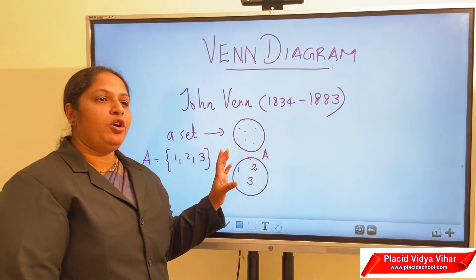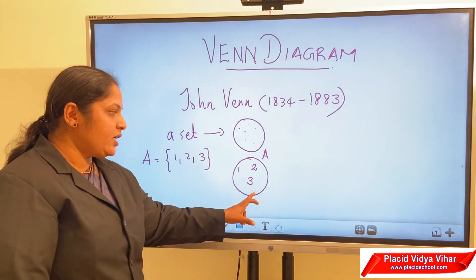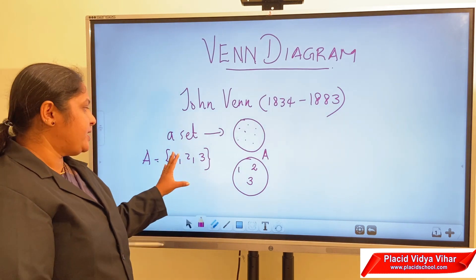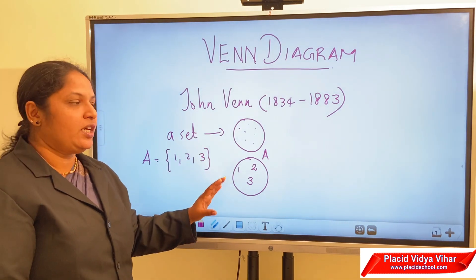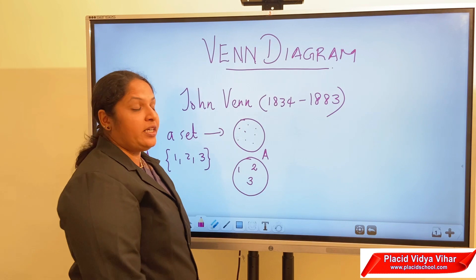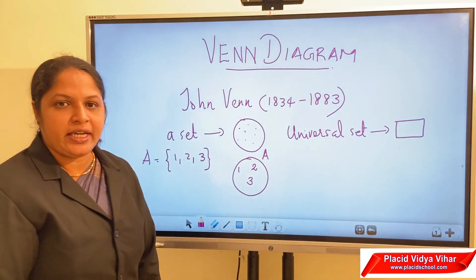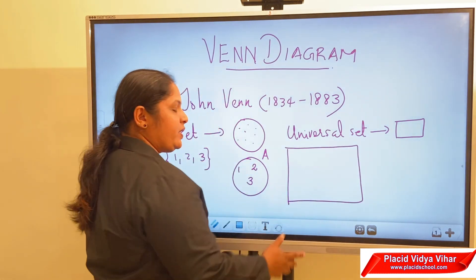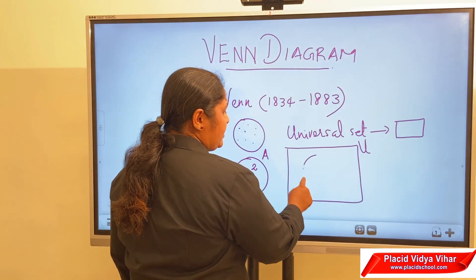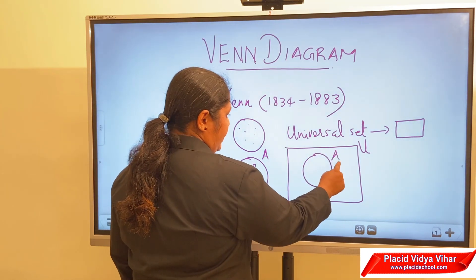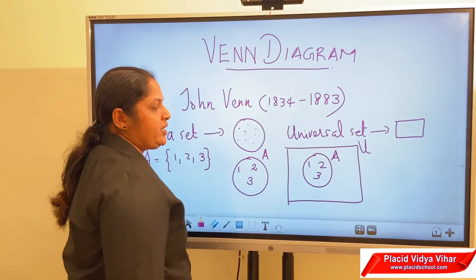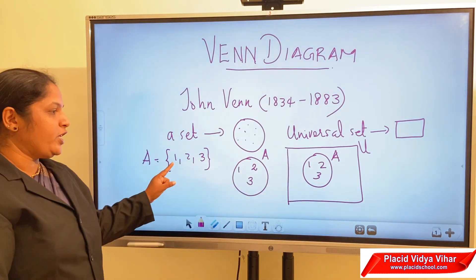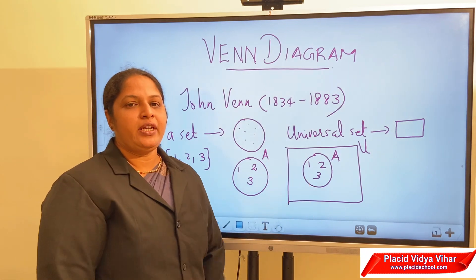For all Venn diagrams, the set is represented using a closed curve and the universal set is represented using a rectangle. Whenever we draw a Venn diagram, we first draw the rectangle for the universal set, and the given set A = {1, 2, 3} is represented as a circle inside that rectangle. This is how we represent set {1, 2, 3} as a Venn diagram.